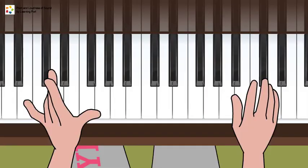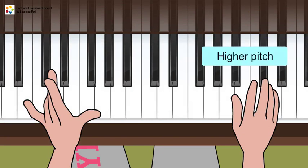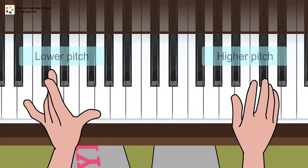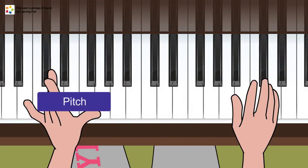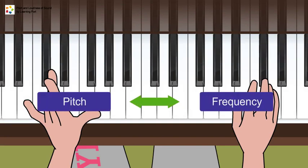When playing the piano, the keys on the right side produce tones that are higher in pitch than the tones produced by keys on the left side. The pitch of a sound or a tone depends on the frequency of the sound wave that is produced by the source.